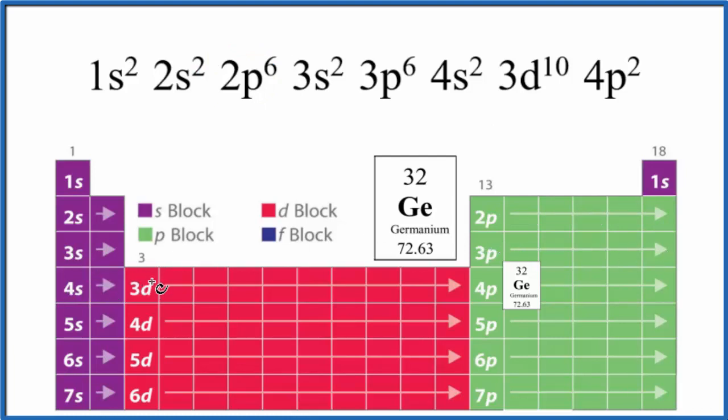From the 4s² we go to the 3d, and the 3d can hold up to 10. So we have 3d¹⁰, and right now we've used 30 electrons. Remember we have 32, so we'll put the last 2 here in the P, 4p¹, 4p². This is the last term in the electron configuration, and right here is germanium.